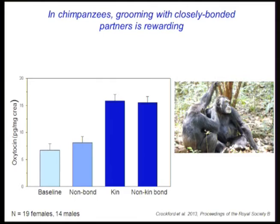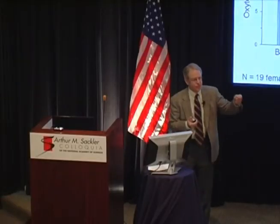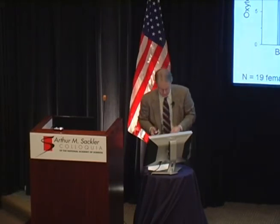There are several important things about these results. First, these are not male-female bonds associated with reproduction — these are same-sex friendships between two males or two females. They occur within a broader society where some individuals are friends and others are not. And notice that it's not the act of grooming itself that is rewarding in the sense of leading to higher oxytocin — it's grooming with a particular partner. The distinction between who you're grooming with is extremely important.